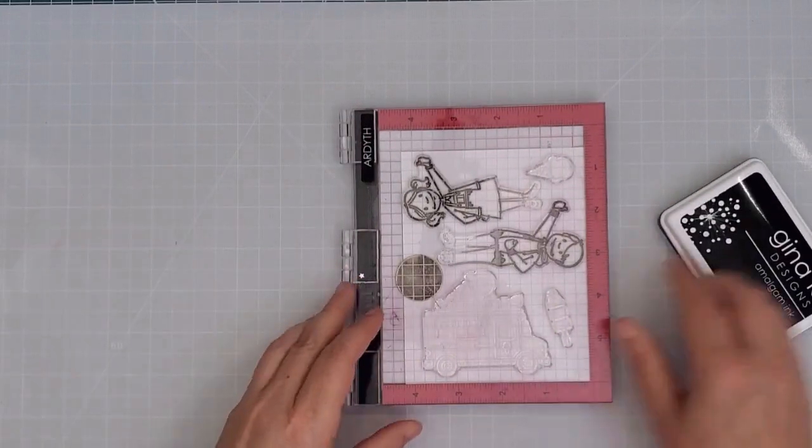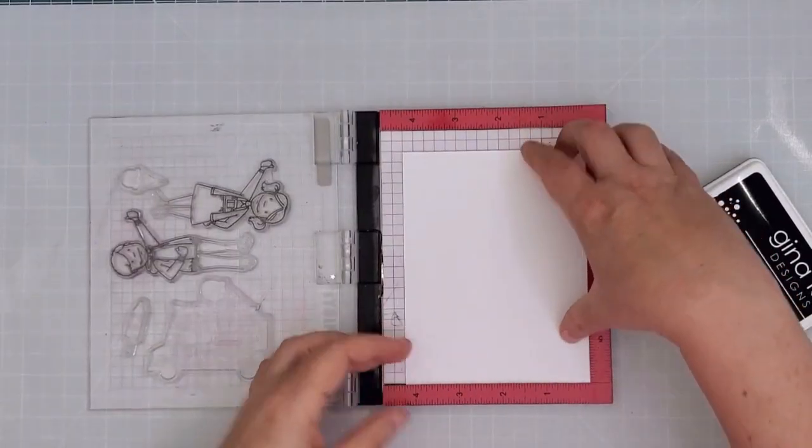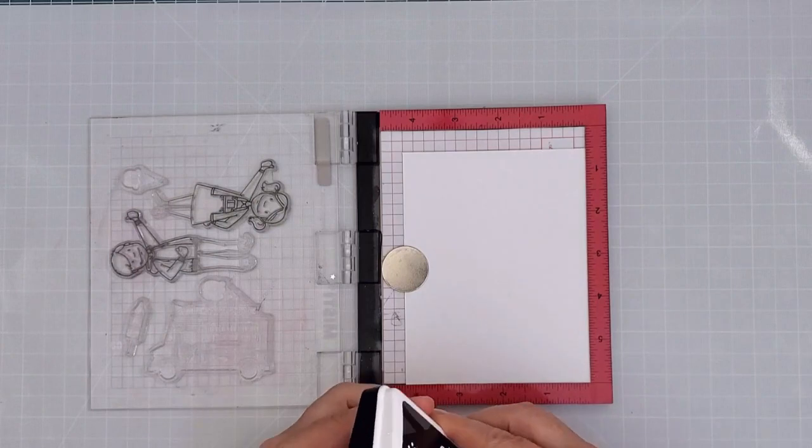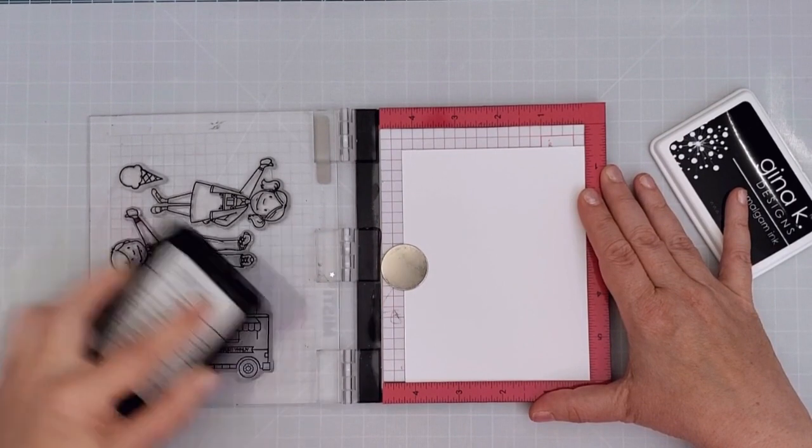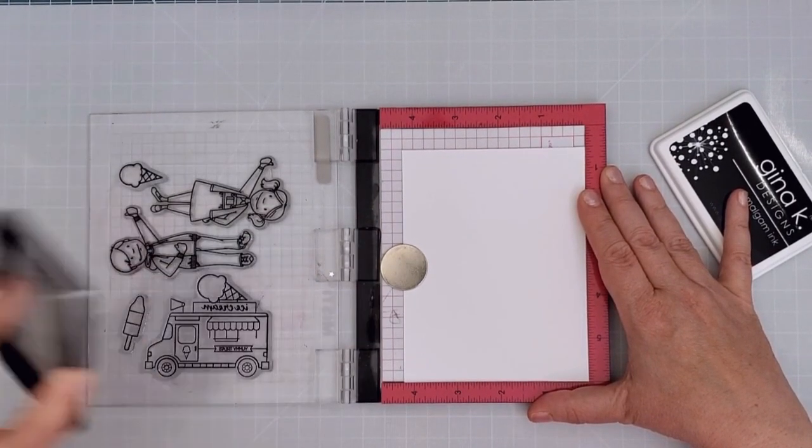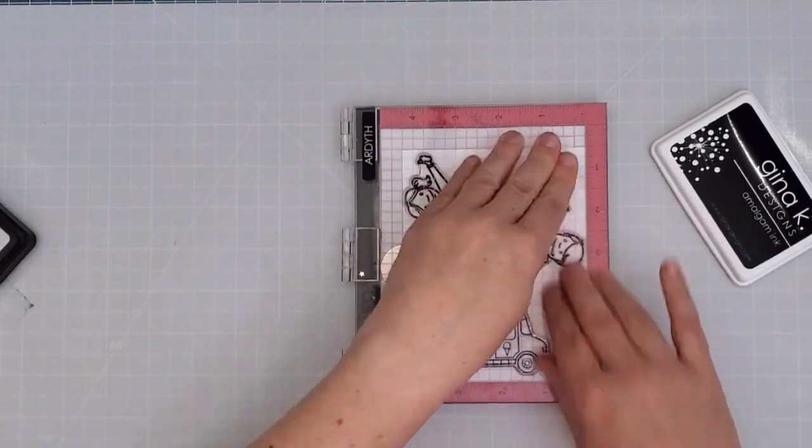I've got them all lined up here on my Mini Misti. This tool makes it so easy to do a lot of stamping all at once and it allows you to re-stamp if you have any problems. But I got it right the first time here with my Gina K Jet Black Amalgam Ink which is Copic friendly.